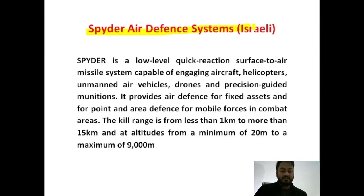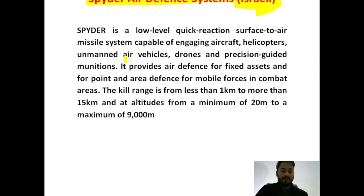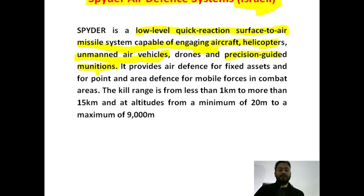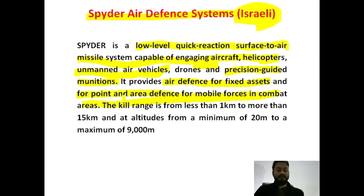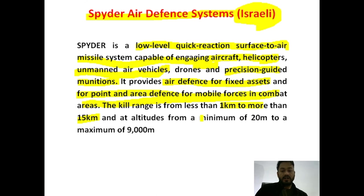Another missile system India is using is the Spider Air Defense System, which is Israel-based and has been purchased from Israel. The Spider is a low-level quick-reaction surface-to-air missile system capable of countering aircraft, helicopters, UAVs, drones, and precision-guided munitions. Once it is launched, it will automatically hit the target because of the inbuilt navigator. It can be mobilized on a track and has a kill range from 1 kilometer to more than 15 kilometers, with an altitude range from a minimum of 20 meters to 9,000 meters.